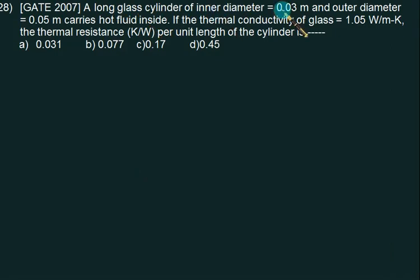A long glass cylinder of inner diameter 0.03 m and outer diameter 0.05 m carries hot fluid inside. The thermal conductivity is 1.05 W/m-K. We want to calculate the thermal resistance.